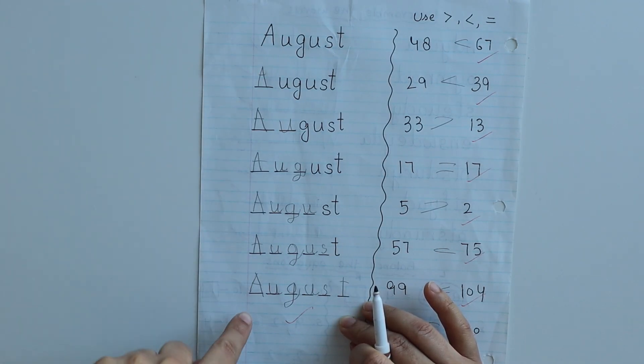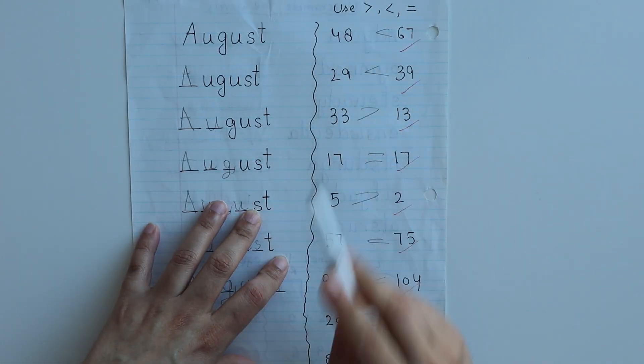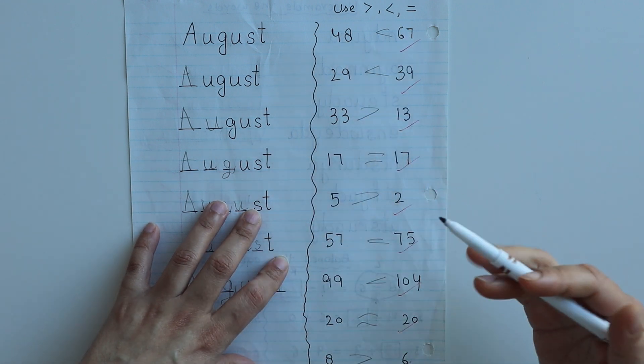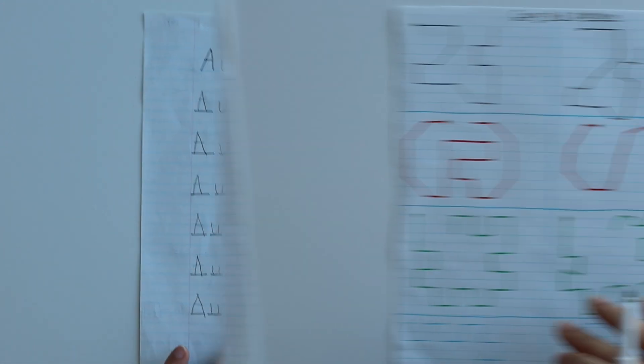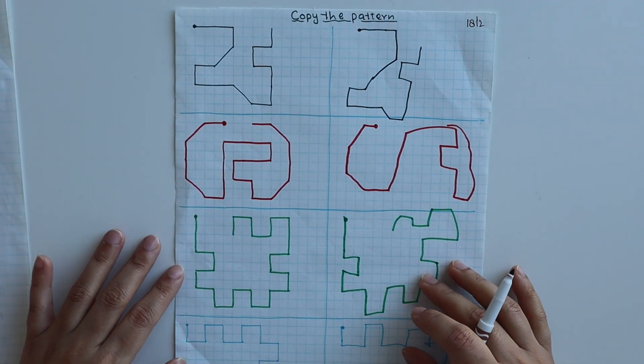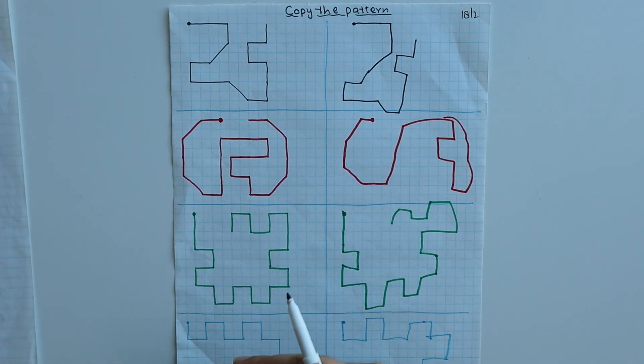I'm also learning the month's name, so today I learned the spelling of August. You can see I've given simple numbers with blanks where you have to use the symbols greater than, less than, or equal to. If you follow our daily practice videos, you'll know I include some brain teaser activities.